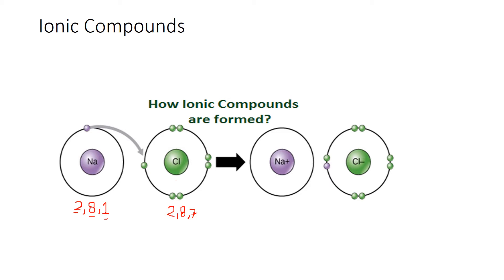So sodium will lose one electron by giving it to the chlorine atom, because chlorine has 7 electrons in the outermost shell and needs a single electron to fulfill it, which will be given by sodium. This transfer takes place as shown — the electron comes to chlorine. Then sodium becomes positively charged with configuration 2, 8, and chlorine becomes negatively charged with configuration 2, 8, 8, having 8 electrons in its outermost shell.